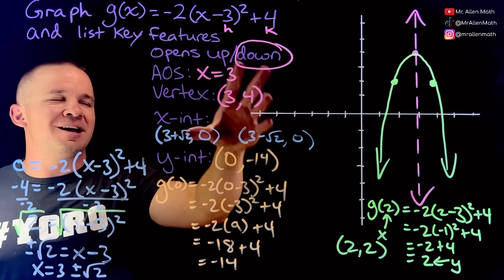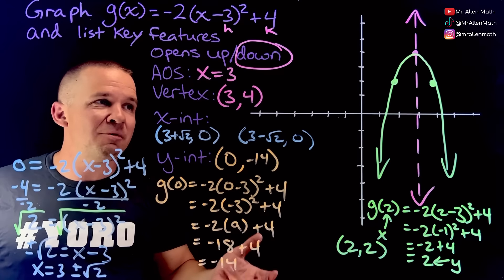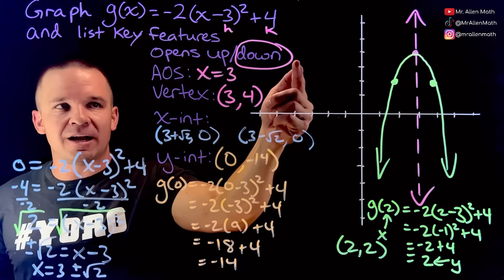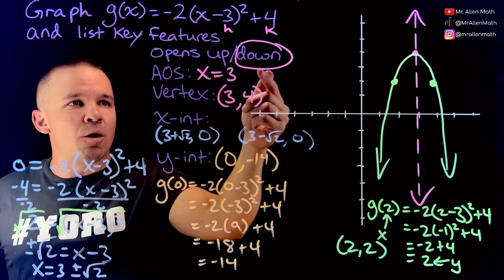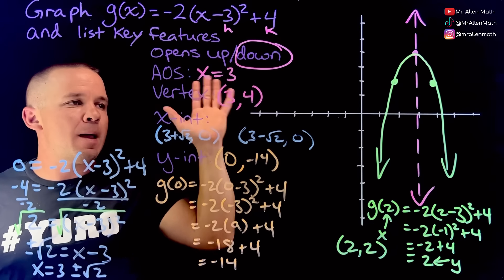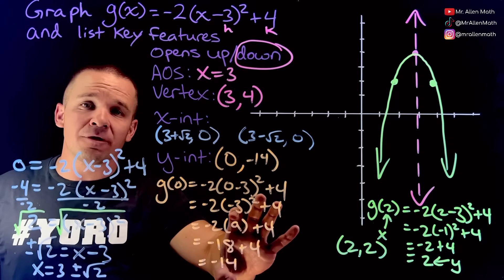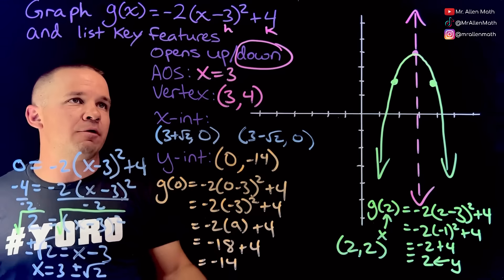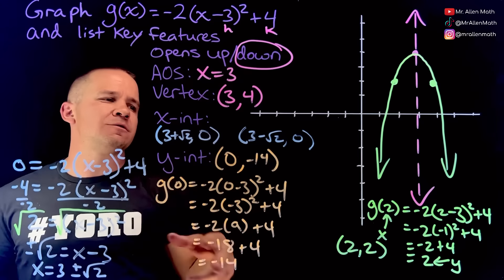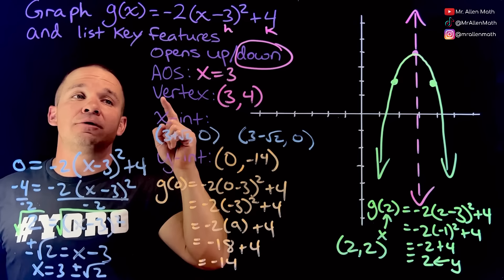Most of the time we're not going to ask for x-intercepts in a situation like this — it is possible to get them, but the main things we'll ask for are: is it opening up or down, what's my axis of symmetry, what's my vertex, and pick another couple of points to graph. The x-intercepts are more advanced bonus information. And there we go — a quadratic function in vertex form, handled like a boss.